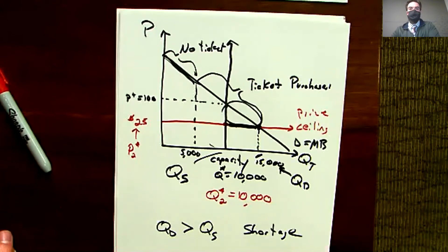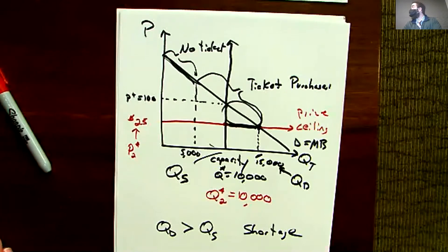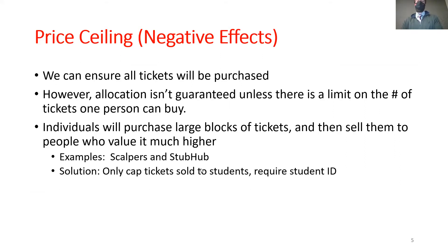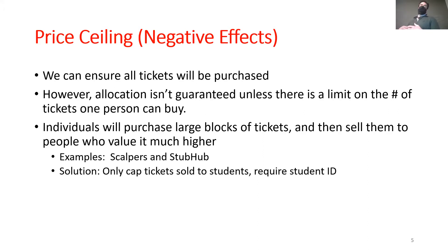One solution is to impose a price ceiling but require that to purchase a ticket at the lower price, buyers must provide a student ID — or whatever group they're trying to give fair access to. Or provide evidence you're over 65 or whatever group they're trying to help. This prevents scalpers from buying large blocks and reselling at higher prices.